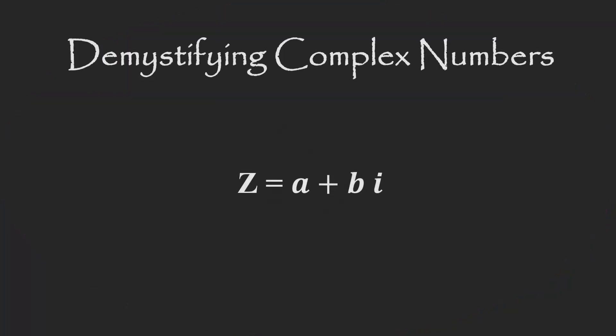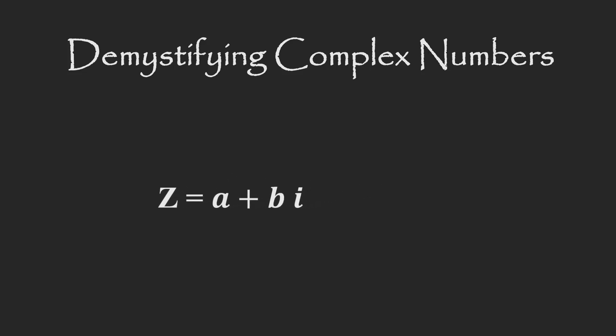The standard algebraic expression for a complex number looks like this, where A is the real component and B is the imaginary component. This expression is often visualized in a Cartesian coordinate system, with the real component on the horizontal axis and the imaginary component on the vertical axis. This is all fine and good and very useful, but this is not the problem.